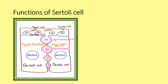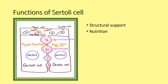Sertoli cells are irregular pyramidal-shaped cells attached to the basal lamina. They are mainly important for structural support and nutritional support during spermatogenesis. They provide anatomical support for the development of the mature sperm and also give nutrition to the mature spermatocytes.